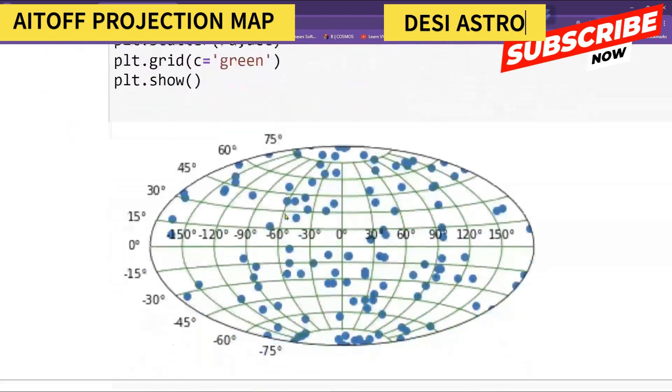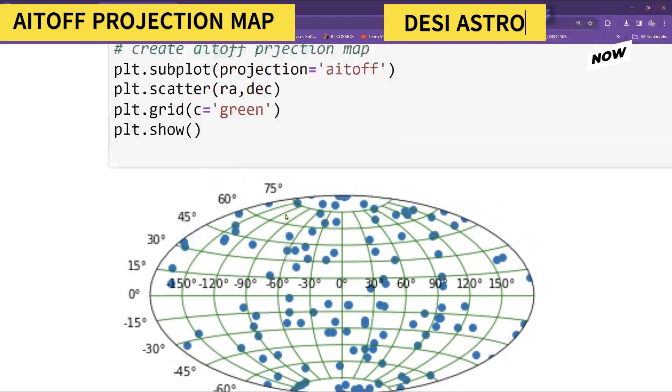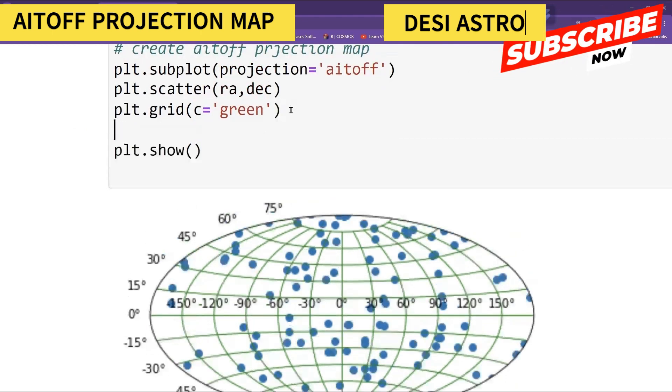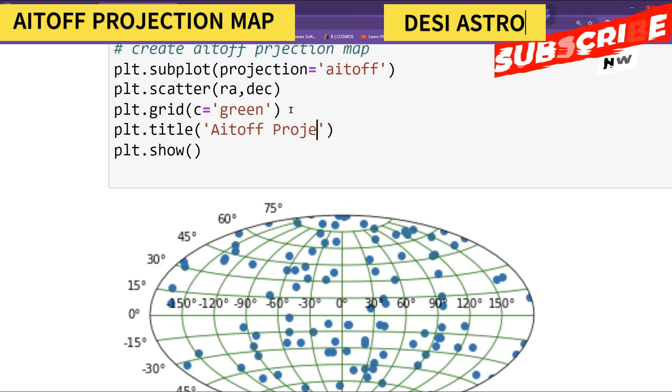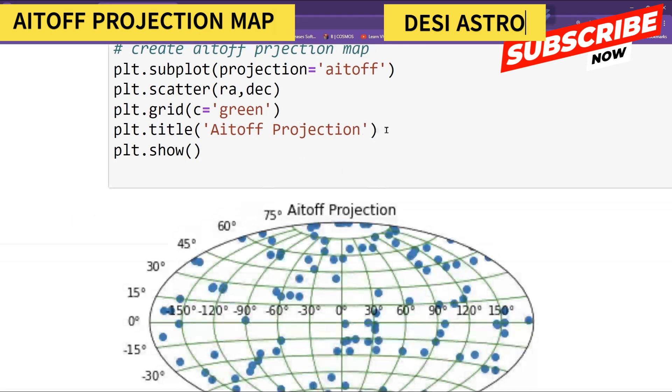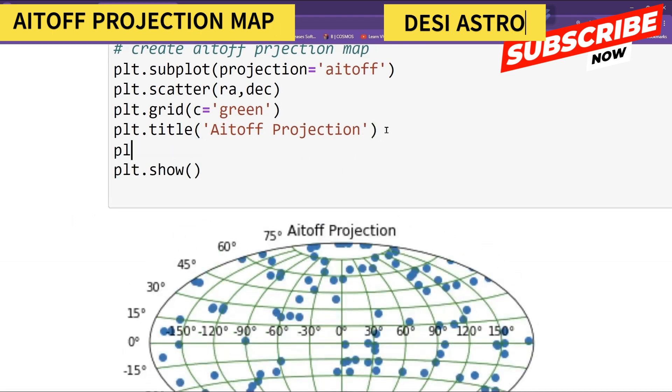So this way you can make your simple Aitoff positional map, right? Can give title, so plt.title, and call it as Aitoff projection.